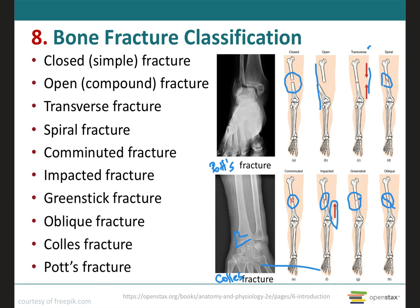The last type is the Potts fracture, where the bone is splintered, crushed, or broken into pieces at the site of impact. This fracture is common for the distal end of the lateral leg bone, which is the fibula, with a serious injury to the distal tibial articulation between the two main fragments.